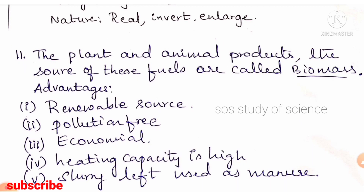Question 11: what is biomass and what are the advantages of biogas? Biomass refers to plant and animal products that are sources of fuel. Advantages of biogas: it is a renewable source, pollution-free, economical, has high heating capacity, and the slurry left over is used as manure.